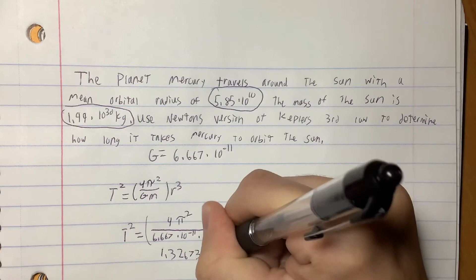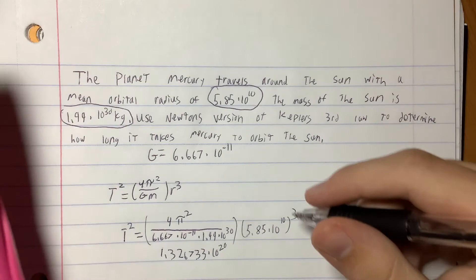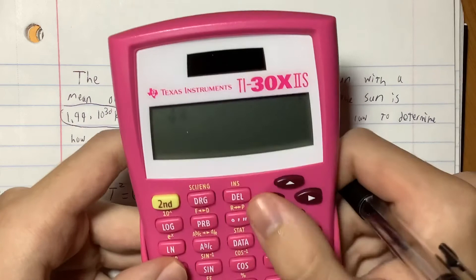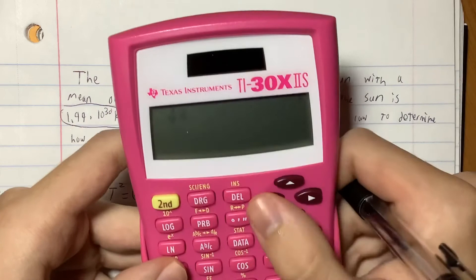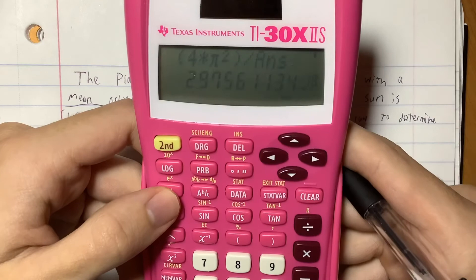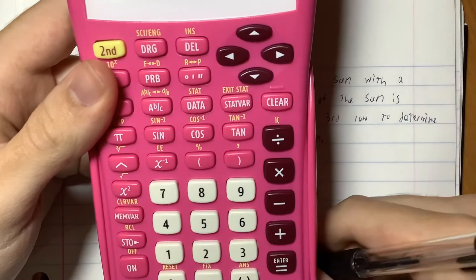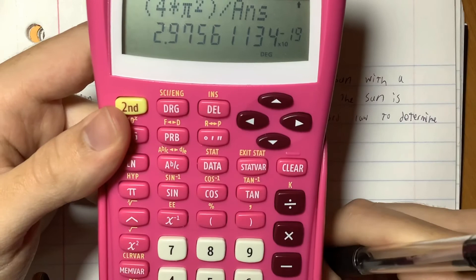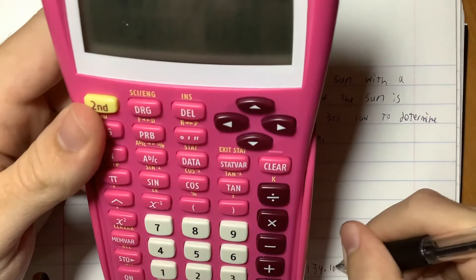Next up we can do 4 times pi squared. That will be divided by the answer we just got, and that'll give us this answer. So we'll have 2.97561134 times 10 to the negative 19th.